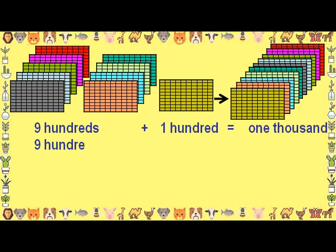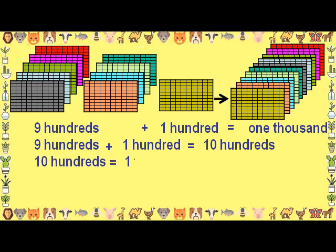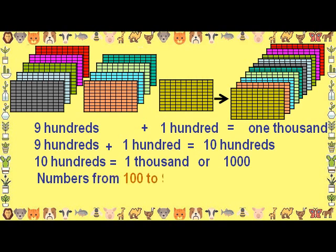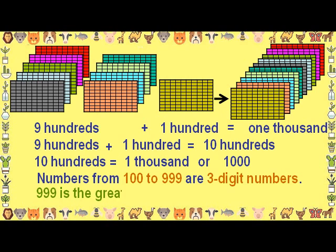9 hundreds plus 100 is equal to 10 hundreds. 10 hundreds is equal to 1000 or the smallest 4-digit number. Numbers from 100 to 999 are 3-digit numbers. 999 is the greatest 3-digit number.